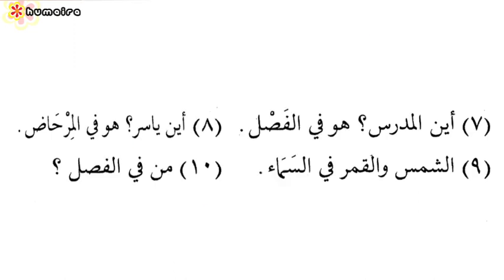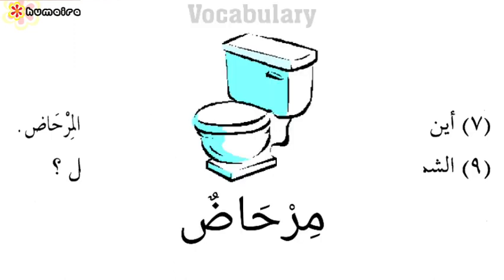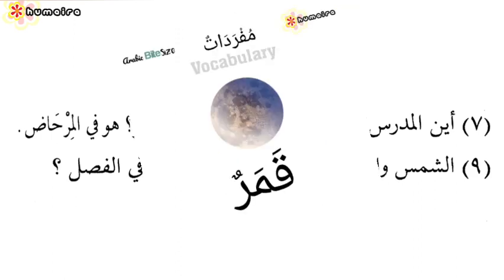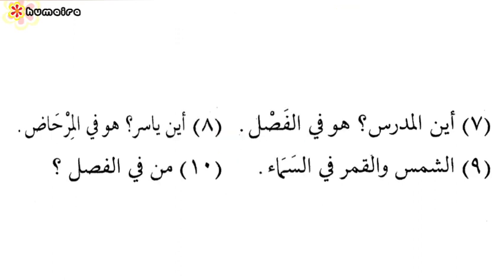أين ياسر? Where is Yasir? هو في المرحاض — He is in the toilet. الشمس والقمر في السماء — The sun and the moon are in the sky. And finally: من في الفصل? Who is in the classroom?